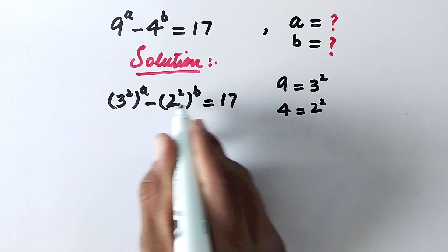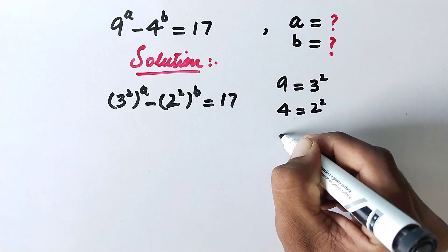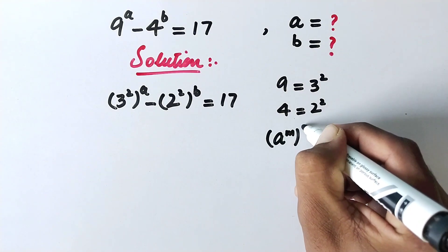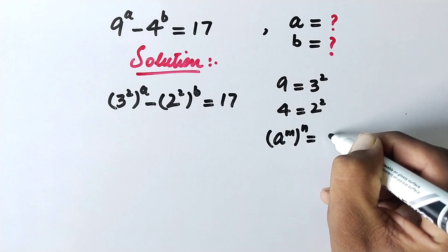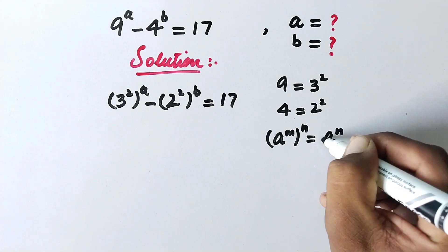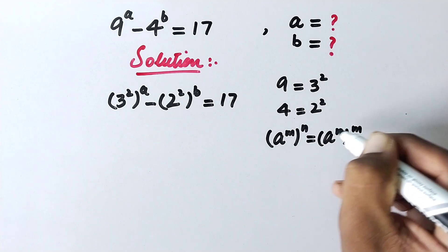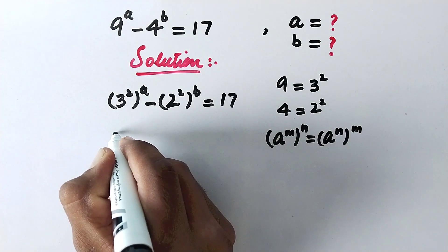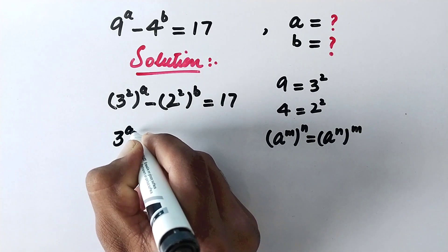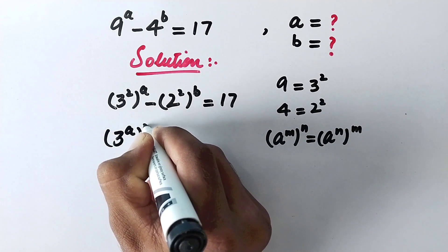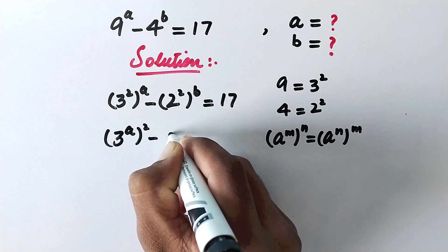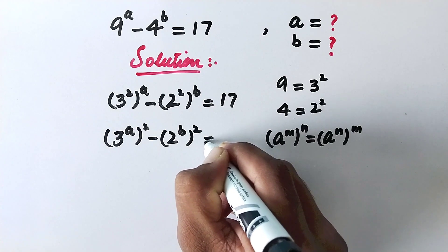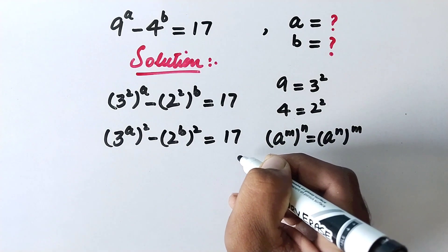Now we will recall a rule of exponents: a to the power m, to the whole power n, is equal to a to the power n, to the whole power m — the powers can be exchanged. So here we will write 3 to the power a, squared, minus 2 to the power b, squared, is equal to 17.